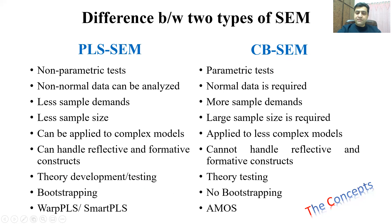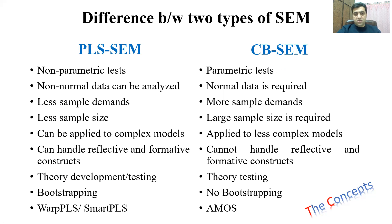The most famous software using PLS-SEM are WarpPLS and SmartPLS, while in CB-SEM the AMOS software is usually used. These are some of the differences between PLS-SEM and covariance-based SEM. In WarpPLS we will be using the PLS-SEM model, which has far fewer restrictions and demands compared to CB-SEM. Thank you very much — we'll meet in new videos with more concepts and then move towards our data analysis using WarpPLS.